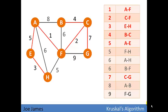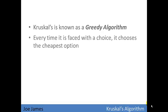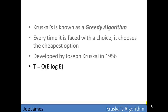Now Kruskal's is known as a greedy algorithm, which means that every time it is faced with a choice, every time it has to make a decision, it chooses the cheapest option. It was developed by Joseph Kruskal in 1956, and it runs in a big O of E log E.